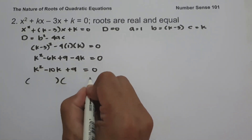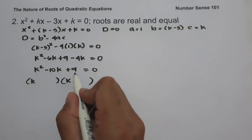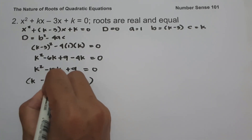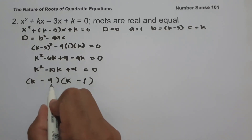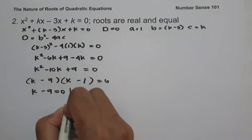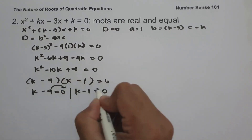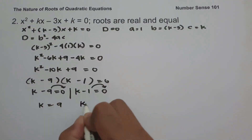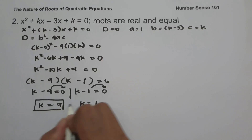So let us factor k squared minus 10k plus 9. The factors of k squared are k and k. We need two numbers that multiply to give 9 and add to give negative 10, which are negative 9 and negative 1. So we have k minus 9 equals 0 and k minus 1 equals 0. Moving the constants to the other side gives k equals 9 and k equals 1. So therefore, the values of k are 9 and 1.